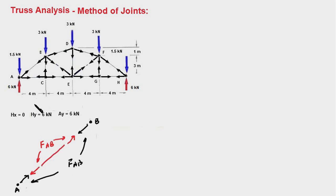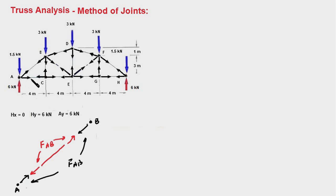The question is: at which pin should we begin our equilibrium analysis? We can start either at pin A or pin H, because at both of these pins only two members are connected. In this case we will begin with pin A, determine those two unknown forces, and then proceed to the adjacent pins, taking up each pin one by one to determine the internal forces of every member.